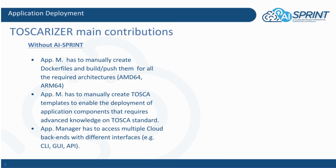The application deployment is not an easy task without the AISprint tool. Without it, the application manager has to manually create Dockerfiles, build, and then push all the images for the different components and different architectures. He also has to manually create TOSCA templates to enable the deployment of the application components, which requires advanced knowledge of the TOSCA standard. The application manager also has to access multiple cloud backends with different interfaces and different APIs.